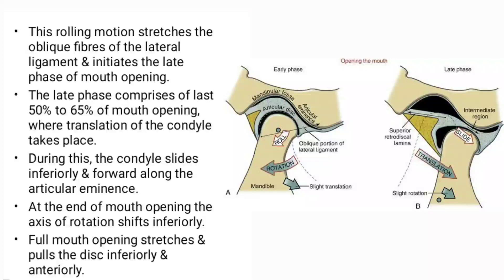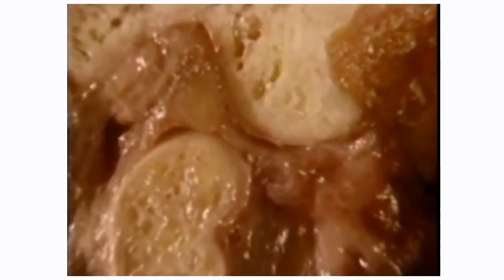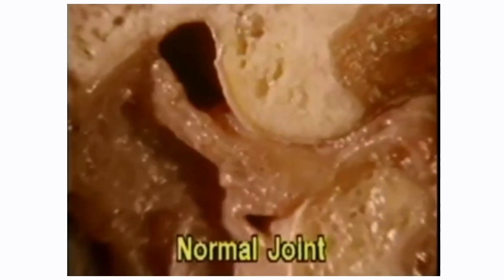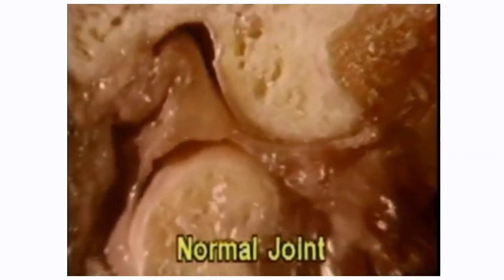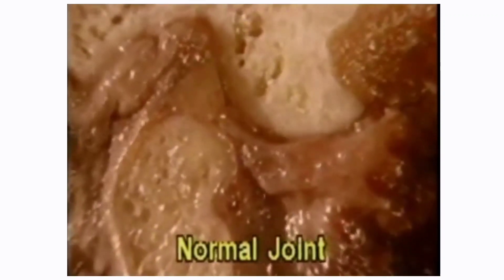The late phase comprises the last 50 to 65% of mouth opening, where translation of the condyle takes place. During this, the condyle slides inferiorly and forward along the articular eminence. At the end of mouth opening, the axis of rotation shifts inferiorly. Full mouth opening stretches and pulls the disc inferiorly and anteriorly. Here you can see the physiological motion occurring at the articular surfaces during elevation and depression of the temporomandibular joint.